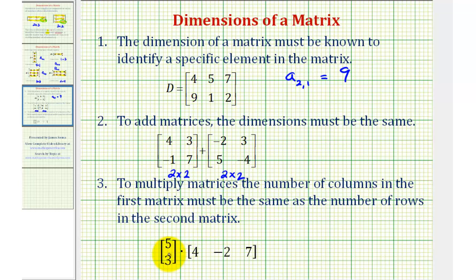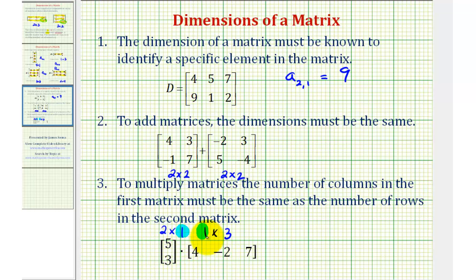So for example, this first matrix has two rows and one column, so it's a two by one matrix. The second matrix has one row and three columns, so it's a one by three matrix. And so we can only multiply these matrices if the number of columns in the first matrix and the number of rows in the second matrix are the same. And since they are, we can perform this multiplication. We will talk about how to perform matrix operations in future videos. Hope you found this helpful.